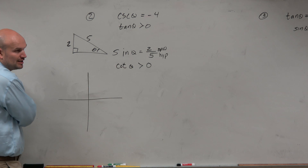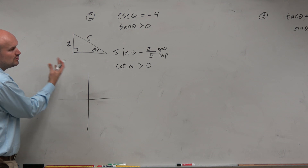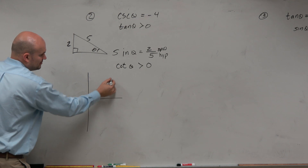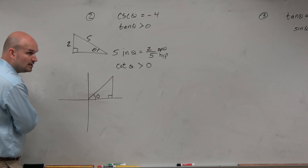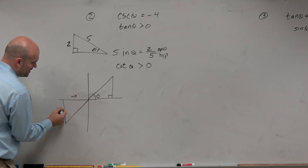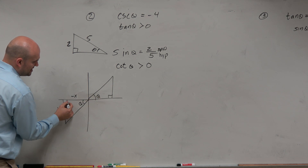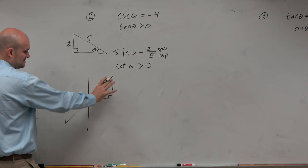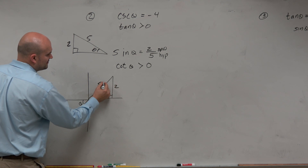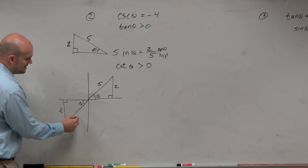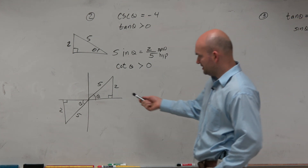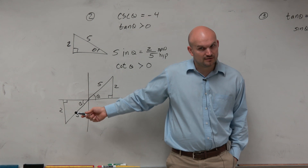Cotangent of theta is greater than 0, meaning it's positive. Remember, cotangent is x over y. So it's either positive in the first quadrant, or it could be positive in the third quadrant because you'd have a negative x over a negative y — cotangent would still be positive. So now we draw both triangles, labeling 2 as opposite and 5 as the hypotenuse in each.